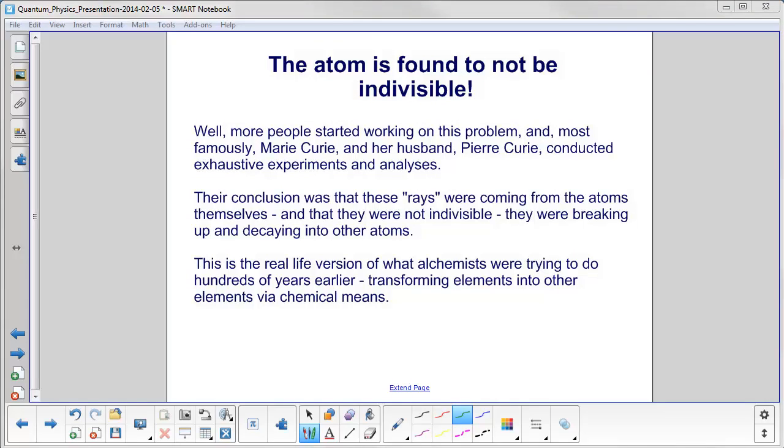More people started working on this problem, and most famously, Marie Curie and her husband Pierre conducted exhaustive experiments and analyses. Their conclusion was that these rays were coming from the atoms themselves and that the atoms were not indivisible. They were breaking apart and decaying into other atoms. So you had one element turning into another element.